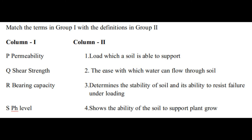Next question: match the terms in group 1 with the definitions in group 2. Column 1 has terminologies: permeability, shear strength, bearing capacity, and pH level. Permeability refers to the ease with which water can flow through soil. Shear strength determines the stability of the soil and its ability to resist failure under loading. Bearing capacity means the load which a soil is able to support. pH level shows the ability of the soil to support plant growth. These are the past year question papers discussed here.